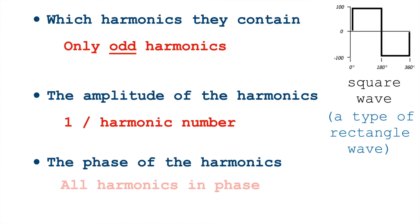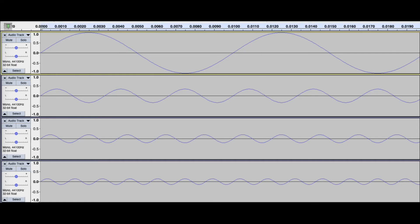Finally, in a square wave, all of the harmonics are in phase. That means when the fundamental starts going up, so does the third, fifth, seventh, etc.